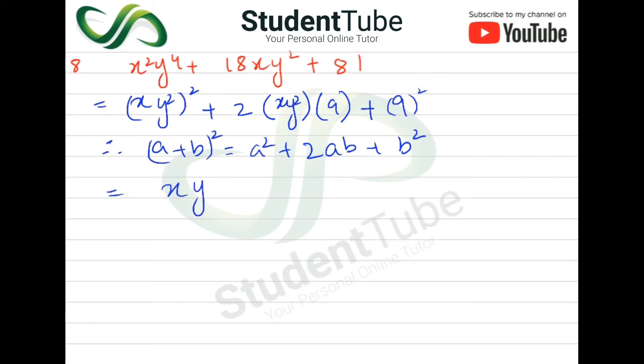xy² plus 9, this whole square is the answer. So (xy² + 9)² is our today's question.